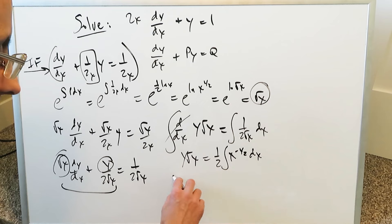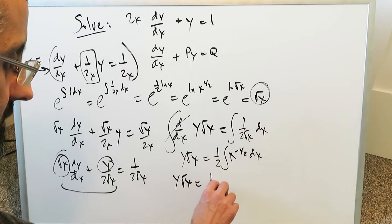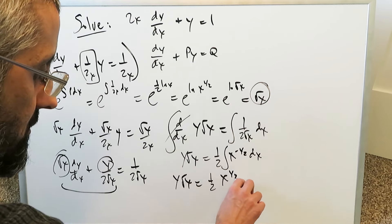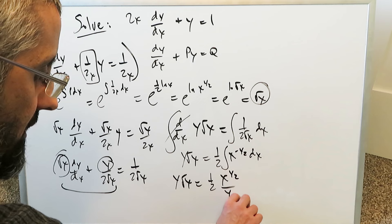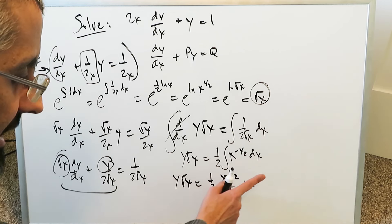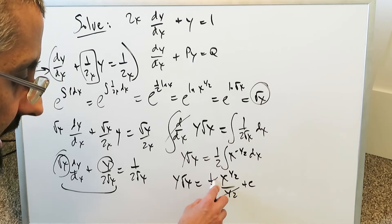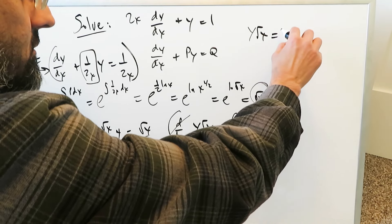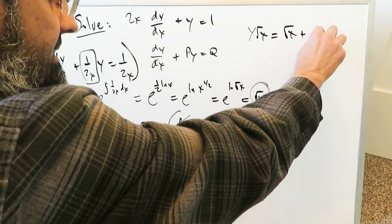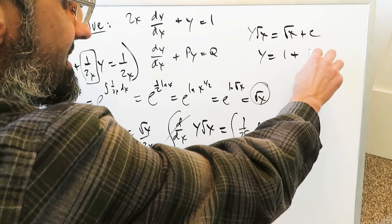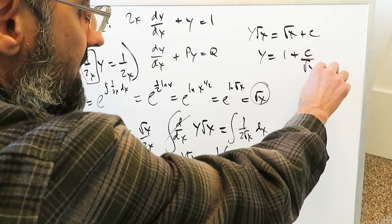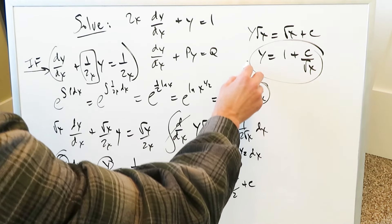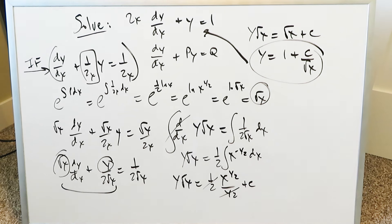When you solve all of this out you have y root x is equal to 1 over 2 times x to the 1/2 divided by 1/2, plus c. The 1/2 over 1/2 factors cancel out, giving y root x equals root x plus c. Dividing through gives y is equal to 1 plus c over root x. That is the function for which this differential equation is true, and this question has been solved.